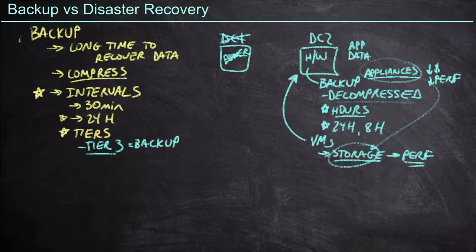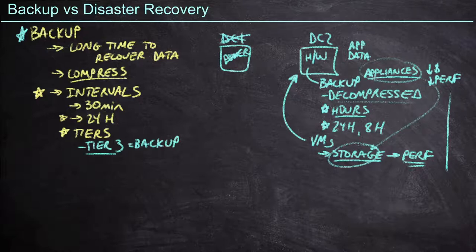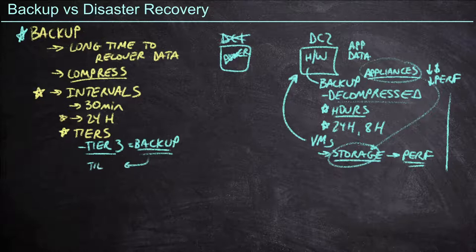It's a great approach because we already have the backup system in place, we know it's going to take a long time, but the priority level isn't such that it's going to matter. Therefore, we save a bunch of money by deploying an existing backup solution for those tier three applications. However, does this make sense to do for tier one applications? Probably not.